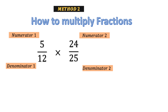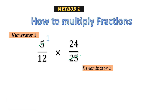Let us check Method 2. Everything is kept the same: numerator 1 and numerator 2 are 5 and 24, denominator 1 is 12, denominator 2 is 25. We have seen that 5 and 12 have no common factor, and 24 and 25 have no common factor. But if we criss-cross, 5 and 25 have the common factor 5, so we can strike both 5 and 25. 5 times 1 is 5, and 5 times 5 is 25. So new numerator 1 and denominator 2 become 1 and 5.